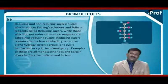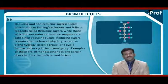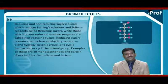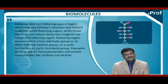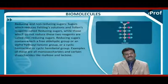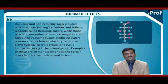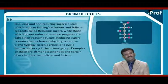Reducing and non-reducing sugars. Sugars which reduce Fehling's solutions and Tollens' reagents are called reducing sugars, while those which do not reduce these two reagents are called non-reducing sugars. Reducing sugars contain either a free aldehyde group, an alpha-hydroxy ketonic group, or a cyclic hemiacetal or cyclic hemiketal. Examples are all monosaccharides and certain disaccharides like maltose and lactose.